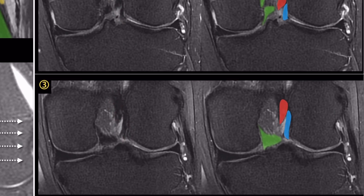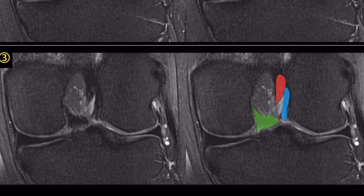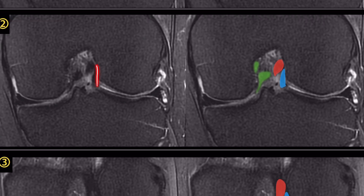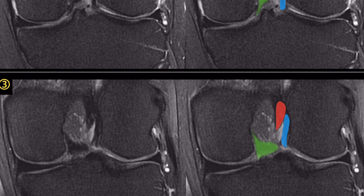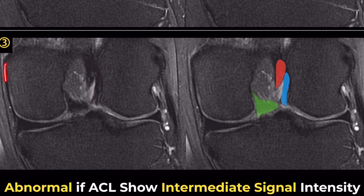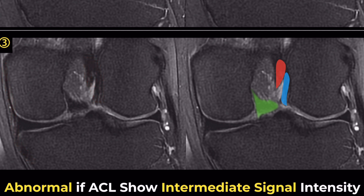It is considered abnormal if the proximal ACL shows intermediate signal intensity on the proton density image or high signal intensity on fat-suppressed proton density. Normal ACL should also be visualized on at least one coronal image posterior to this level. If the ACL is not visible posterior to the MCL level, it suggests the possibility of a tear in the femoral attachment of the ACL. In addition, there should be no fluid signal intensity between the femoral attachment site and the ACL fibers.